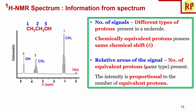The relative areas of the signals indicate the number of equivalent protons — note it is the area, not the height of the signal. The area is larger when there are more equivalent protons. The methyl group has 3 protons, methylene has 2, and hydroxyl has 1. So the methyl signal area is largest, followed by methylene, and hydroxyl has the smallest area. The intensity is proportional to the number of equivalent protons.